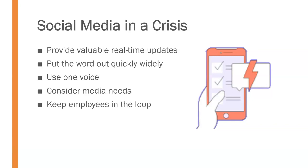Don't forget your employees. Keep them in the loop and make sure they understand what's going on — hopefully they're not getting the word from public social media first. Maybe you have a separate internal communication channel to keep employees informed. And remember to be accessible through all of this. Use social media to be accessible to your audiences, to the media, to the public — answer questions as best you can. Use it in such a way that it creates that relational two-way communication with your publics in these types of situations.